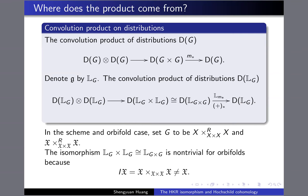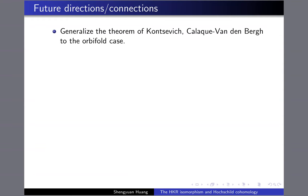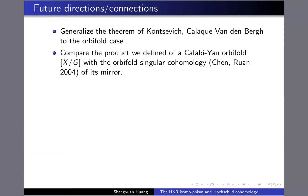This is how we define the product structure on the orbifold polyvector field. Since we now have product structures on both sides — one on the orbifold Hochschild cohomology and one on the orbifold polyvector field — we can ask how to generalize the theorem of Kontsevich and Calaque-VandenBergh to the orbifold case: how can we get an isomorphism of algebras? We also want to compare the product to the one defined for Calaque-VandenBergh or for the orbifold singular cohomology of its mirror, because in homological mirror symmetry the Hochschild cohomology should match with the quantum cohomology.